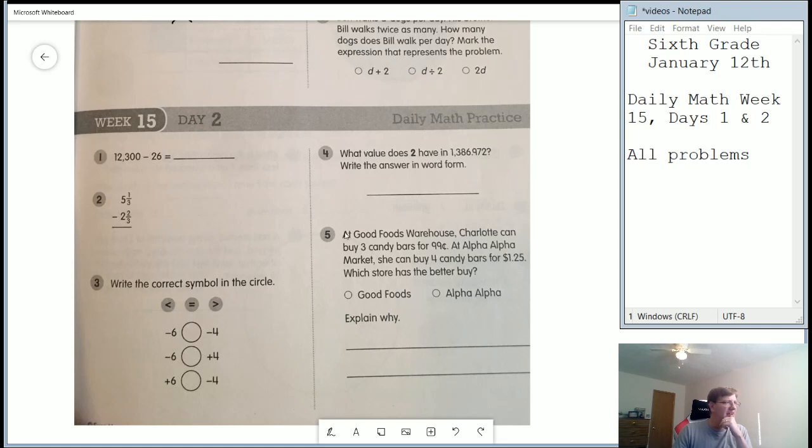And number five, at this particular location, it sounds like a grocery store. Charlotte can buy three candy bars for 99 cents. At another one, she can buy four candy bars for $1.25. Which store has the better buy? So we can take our number of candy bars and the price, divide the price by the number of candy bars for both of those, which one gives us the smaller amount that we would pay per candy bar. We have done this before when we were working with unit rates.